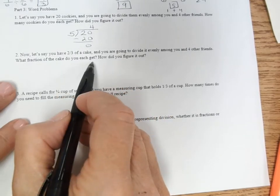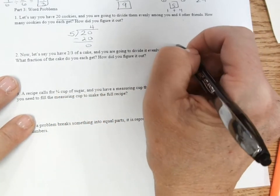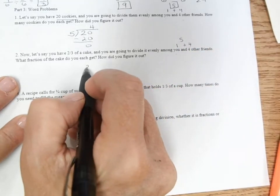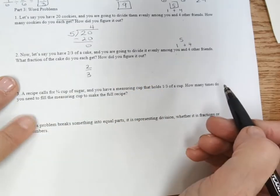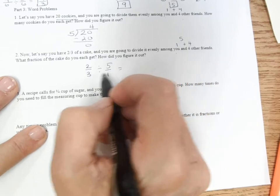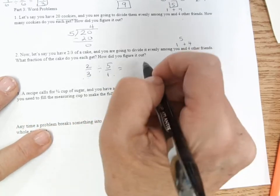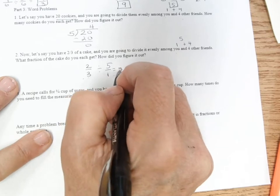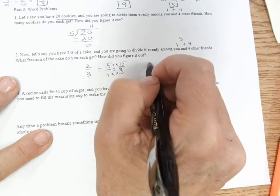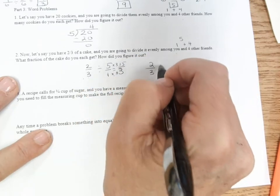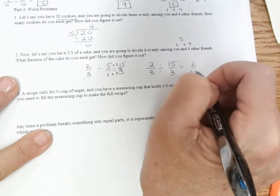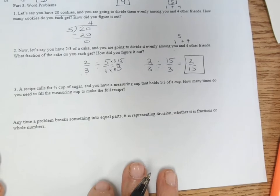Next question. There is two-thirds of a cake. We're going to divide it evenly between you and four others. So five people. So two-thirds of a cake divided between five people. Once again, common denominator. So I'm going to use three. So this in thirds is times three times three, so it's 15. So it's two-thirds divided by 15-thirds equals two-fifteenths. So each of us will get two-fifteenths of a piece of cake.